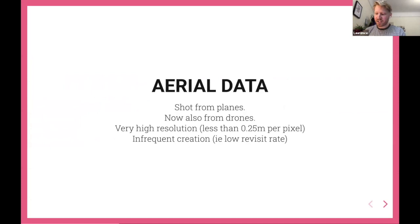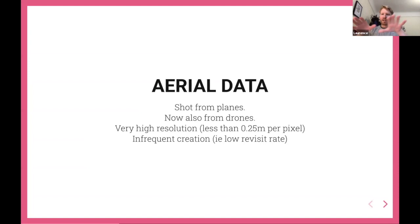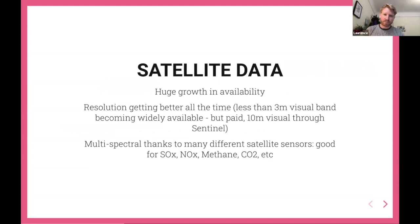I talk about aerial and overhead imagery — there are two different types. One is aerial data from planes and drones. If you're on Google Maps and zoom all the way in, what you're probably seeing in the UK is aerial data from a plane, not a satellite view even though the map calls it that. Drone data can be really high resolution because it's much closer, but flying a plane across the country doesn't happen that often, so there's a much lower revisit rate — how often you get an image of a certain place.